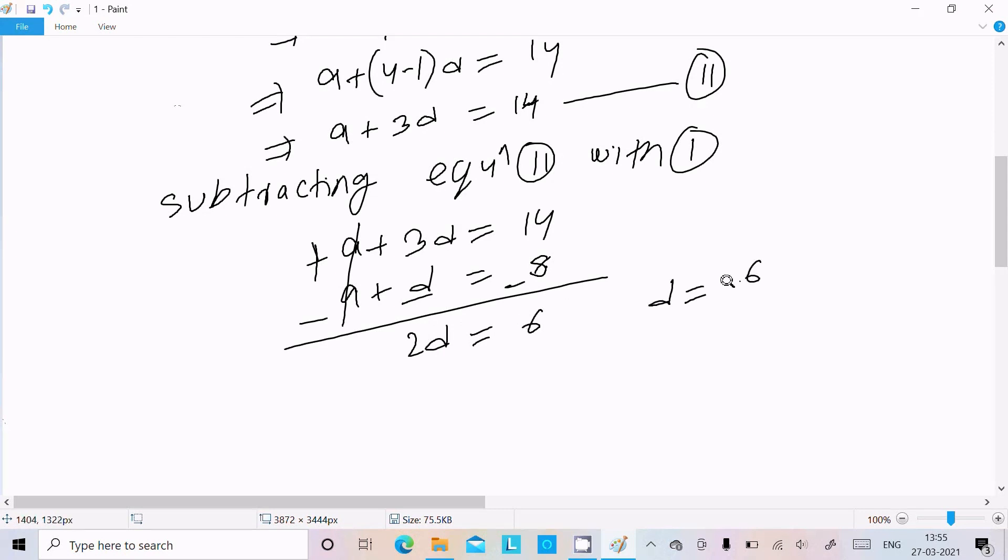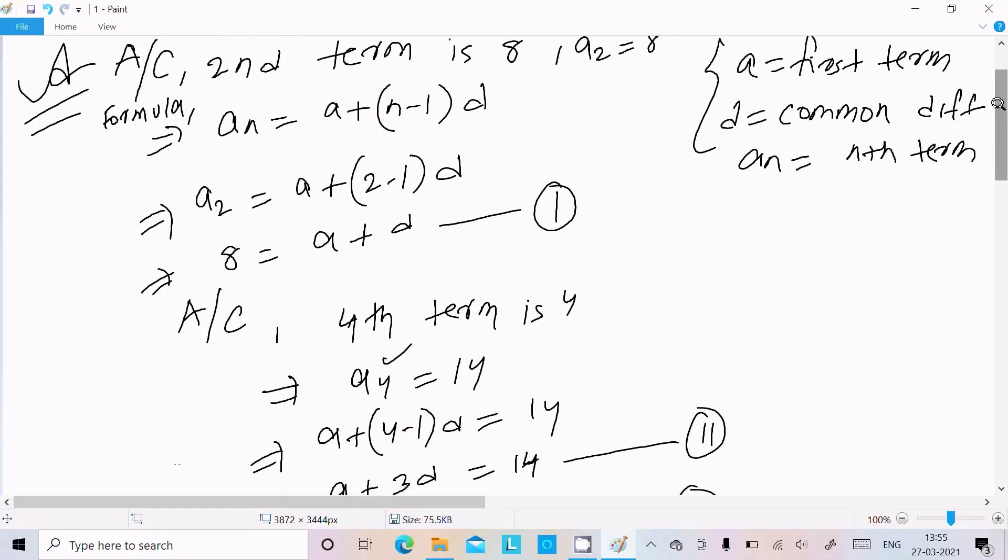So d = 6/2, which means d = 3. The common difference is 3.